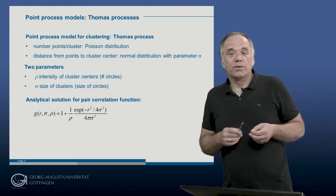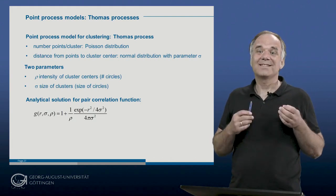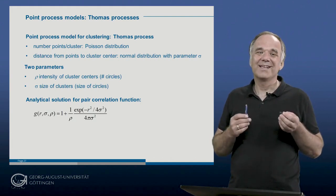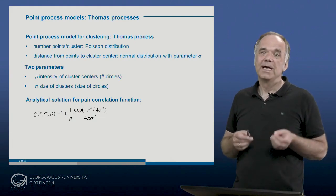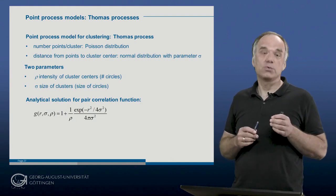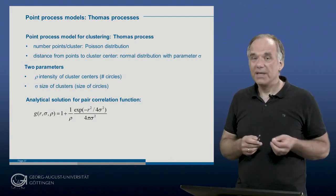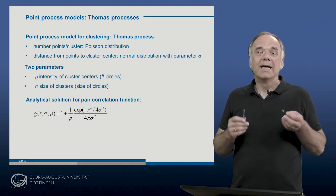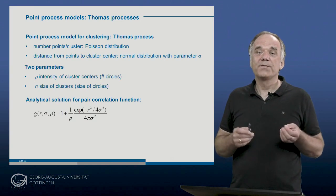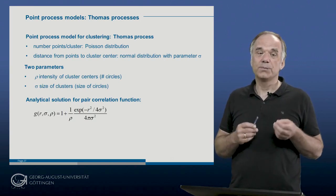I present this Thomas process here because it has a very nice property. This property is that we can calculate its pair correlation function analytically and even obtain a quite simple solution. We can even calculate the pair correlation function of the double cluster Thomas process, and this allows for a very simple fitting of the Thomas process to the pair correlation function of the observed pattern.